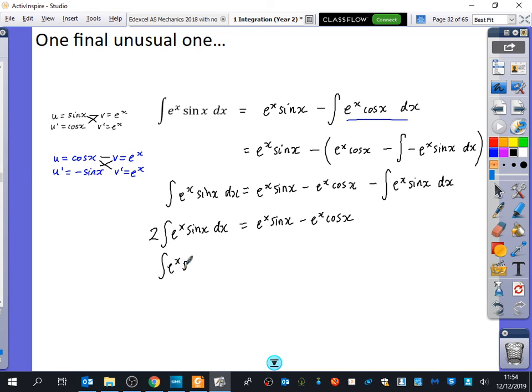So our answer of e to the x, sine x, dx is a half e to the x, I'm just factorizing, sine x, minus cos x, plus c.